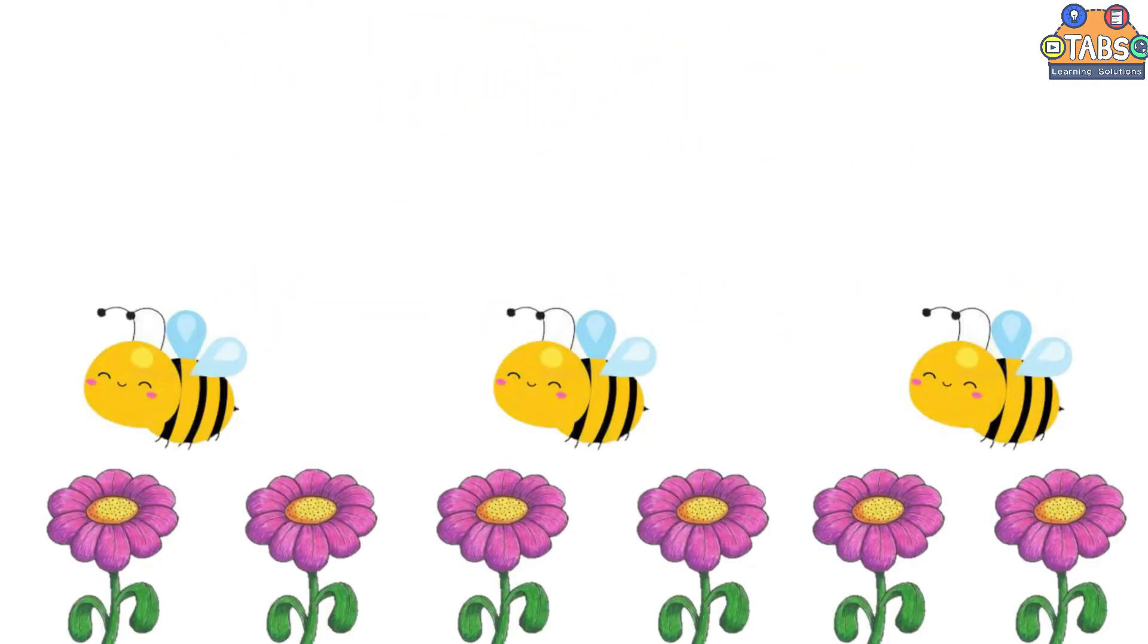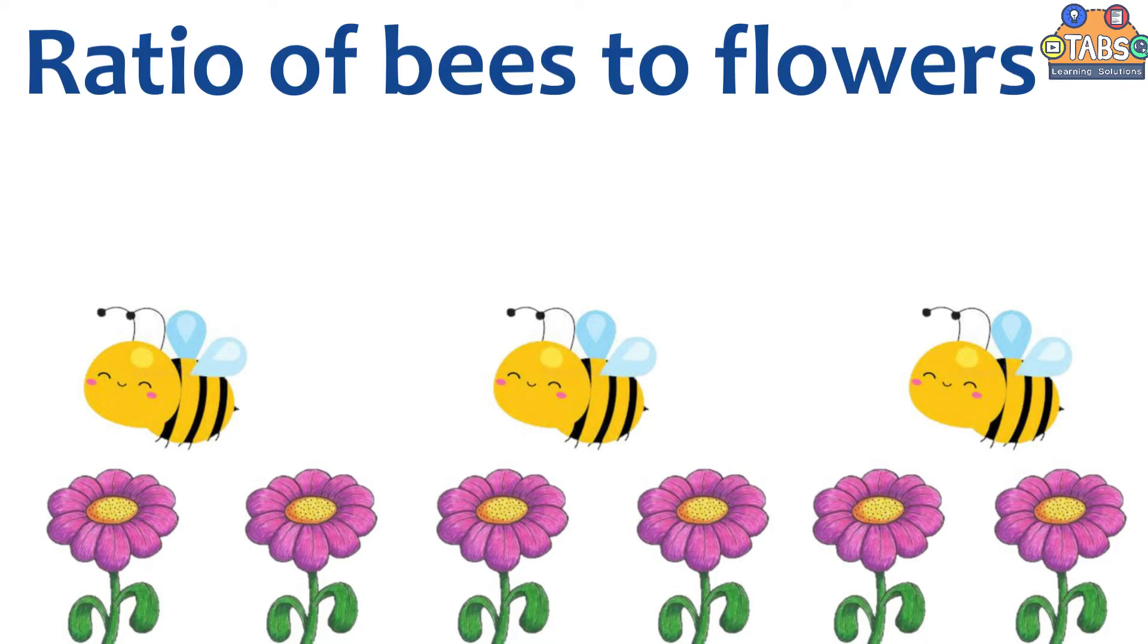In this example, there are three bees and six flowers. The ratio of bees to flowers is three to six. There are many ways to write the ratio of numbers. We can use a colon to express the ratio: three is to six.